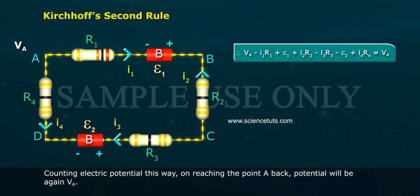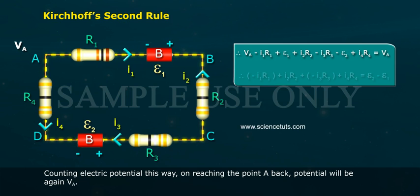Therefore, VA minus I1 R1 plus Epsilon 1 plus I2 R2 minus I3 R3 minus Epsilon 2 plus I4 R4 equals VA.